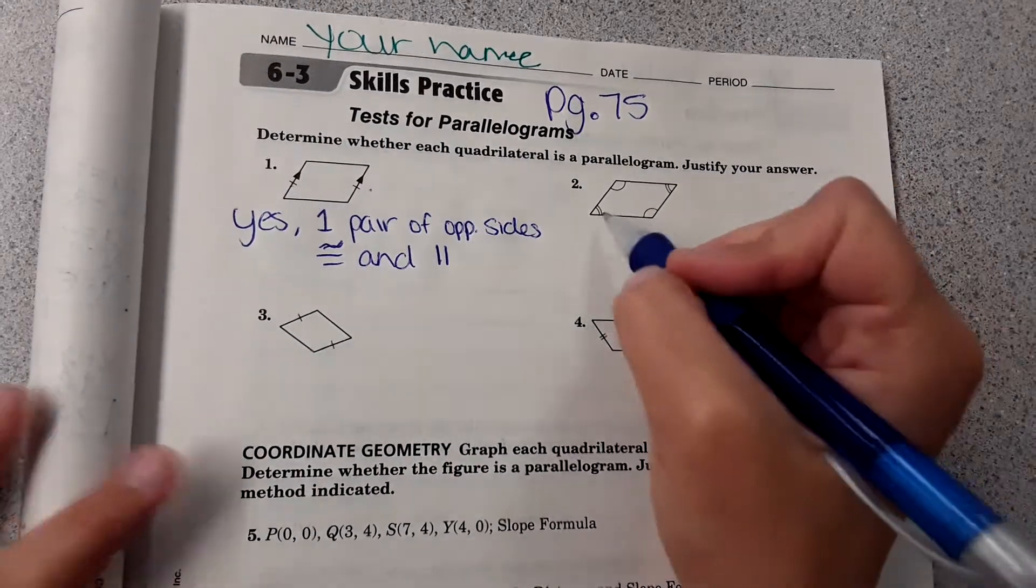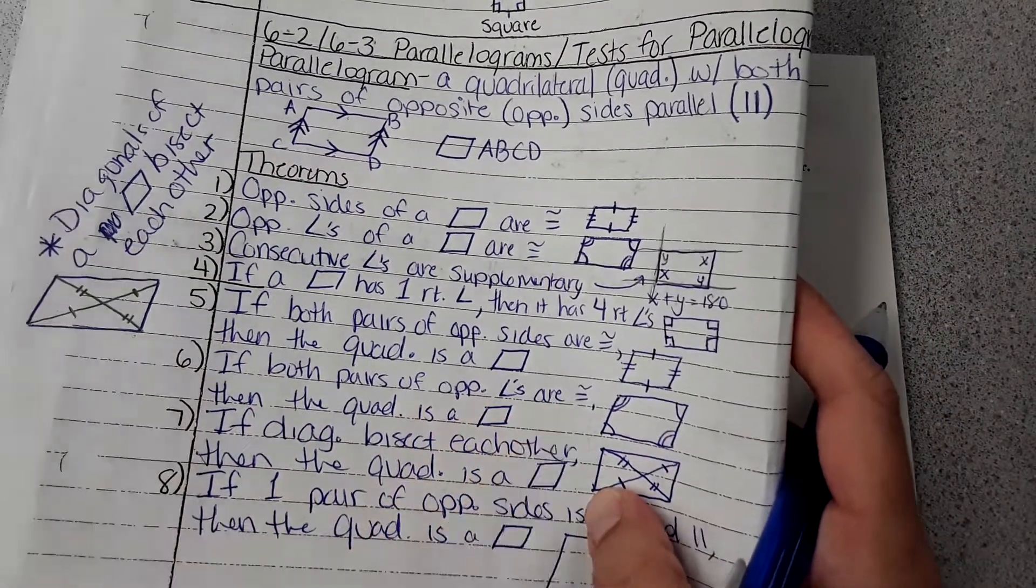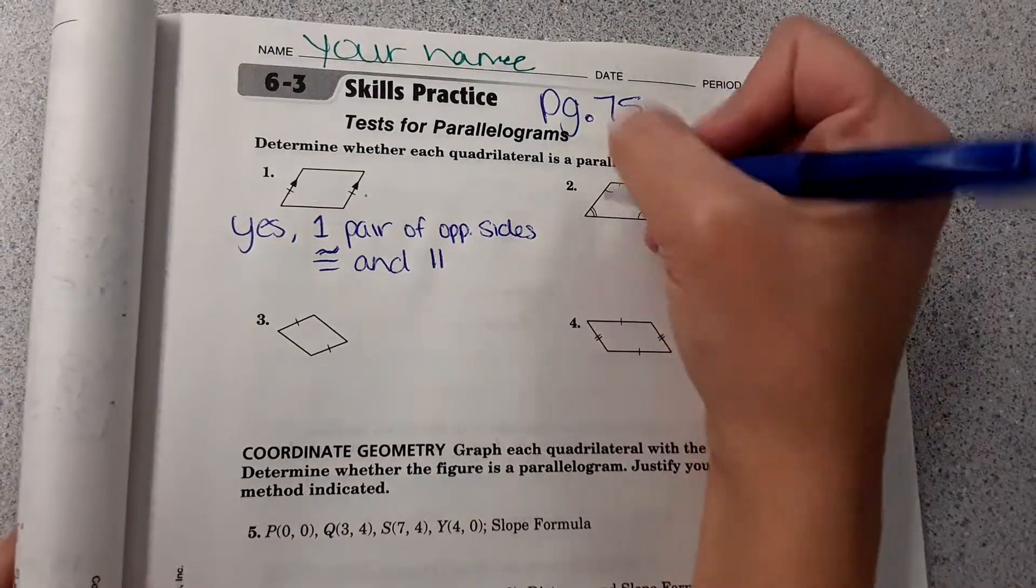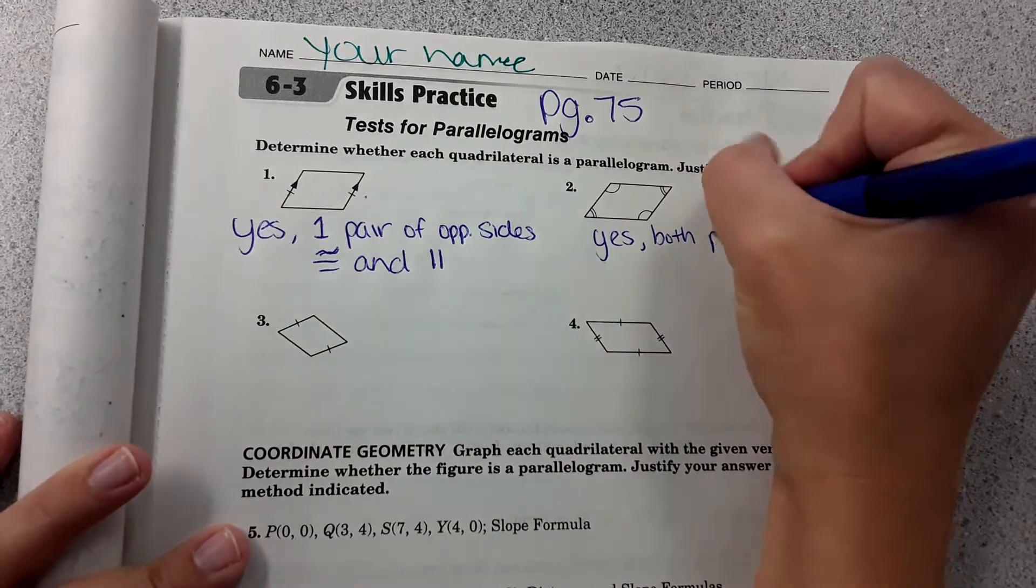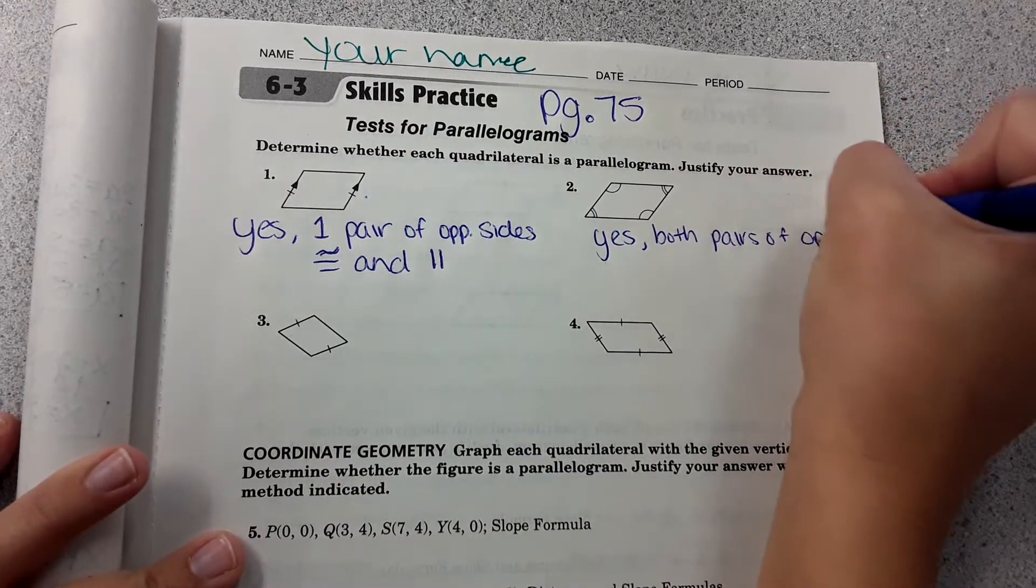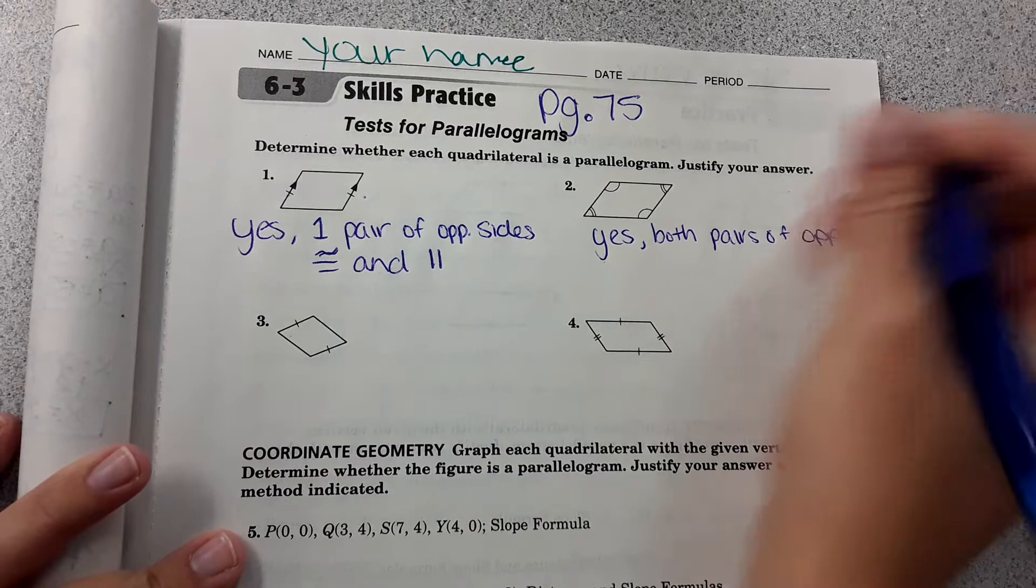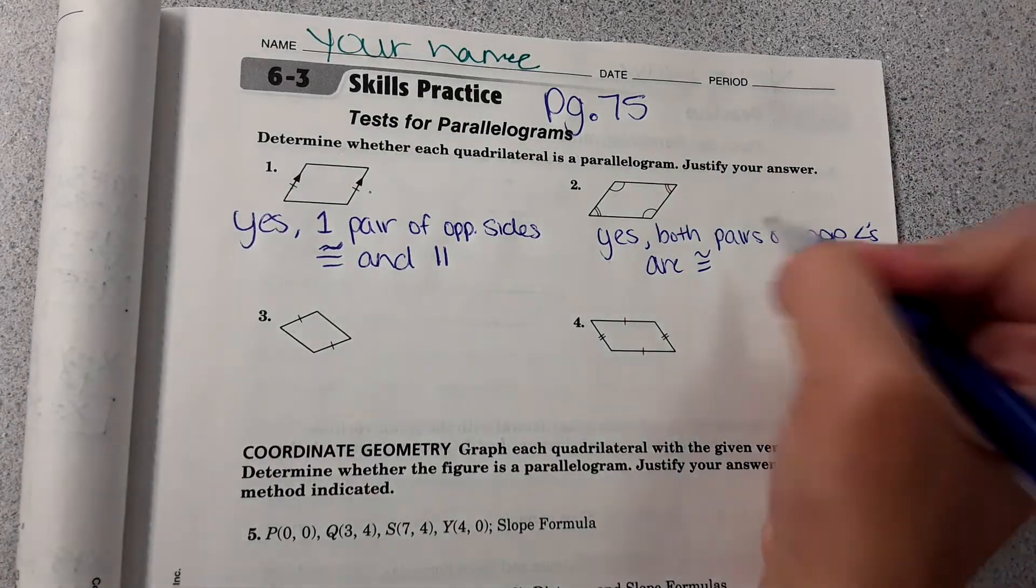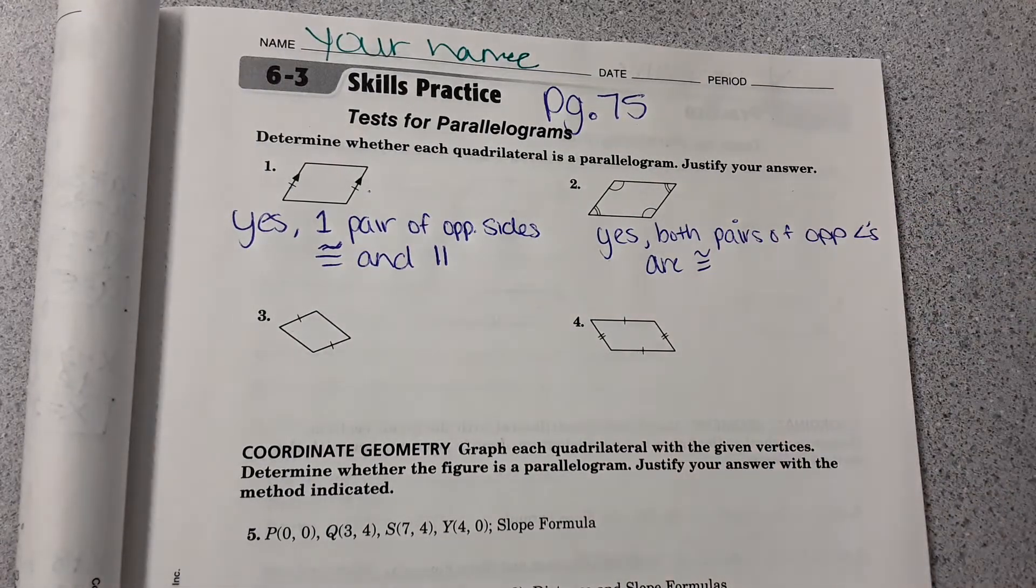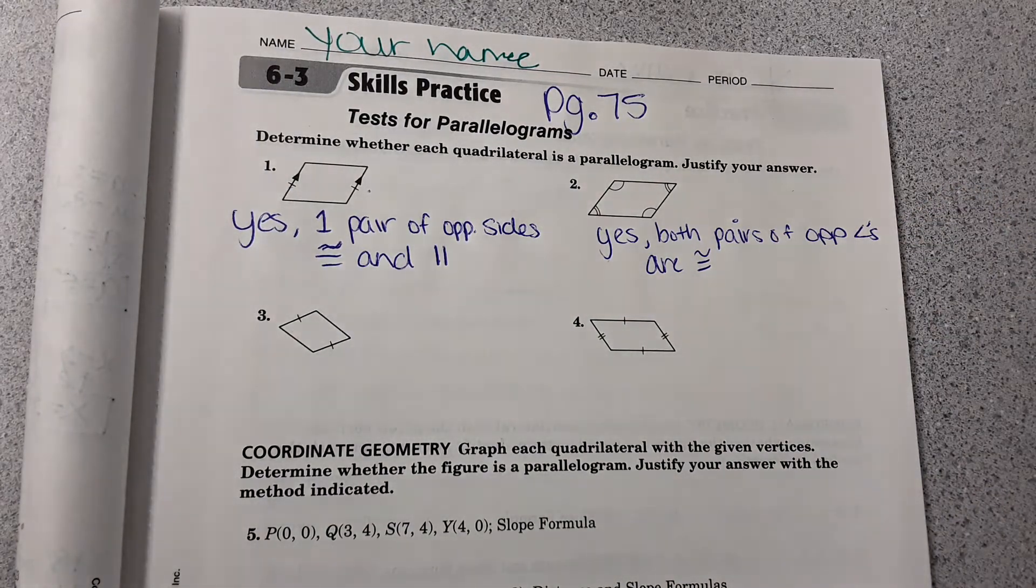Number two shows that the opposite angles are congruent. On your notes, it says if both pairs of opposite angles are congruent, then the quadrilateral is a parallelogram. So yes, it is a parallelogram, both pairs of opposite angles are congruent.